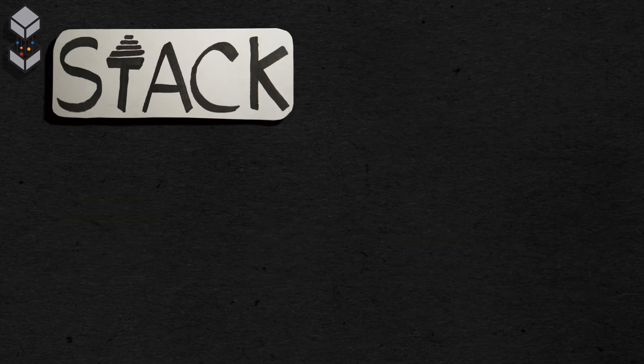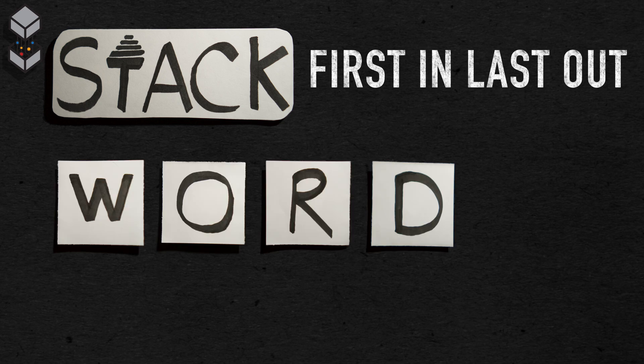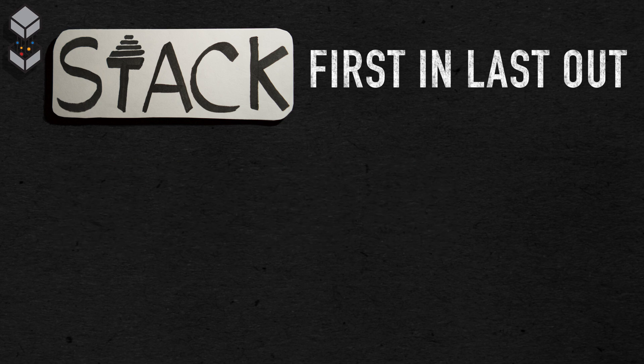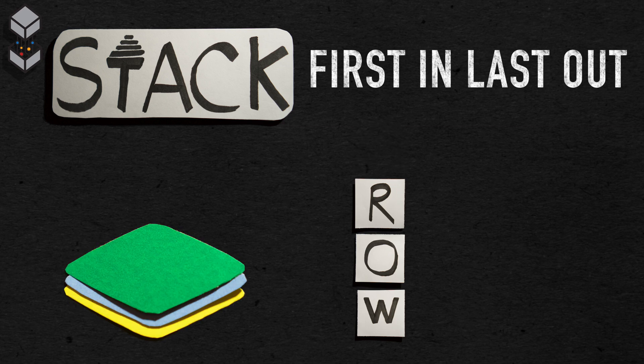A stack is very similar to a queue, but instead follows the first in, last out property. This can be compared to the undo button in word processors. In this example, the stack would be the list of words you've typed. Following the first in, last out property, the last word you typed would be undone first.